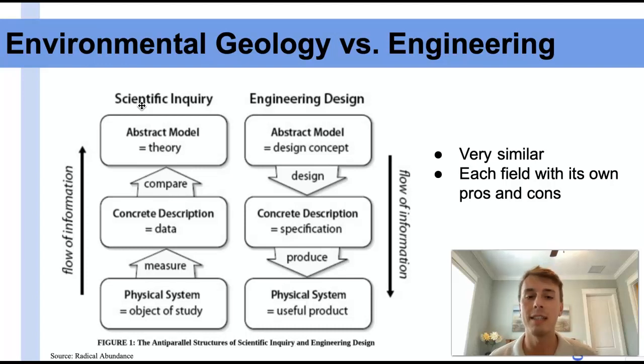Whereas engineering design takes these abstract models that are often developed by scientists, the way we expect things to happen has been developed by a scientist, and so an engineer can take that expectation, take that model, design something that then turns into a physical system. So I know water flows this way, and so I'm able to make a water treatment plant that flows in the same way and uses these equations and flows that have been determined by scientific inquiry.